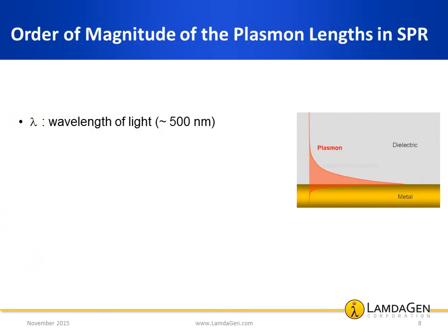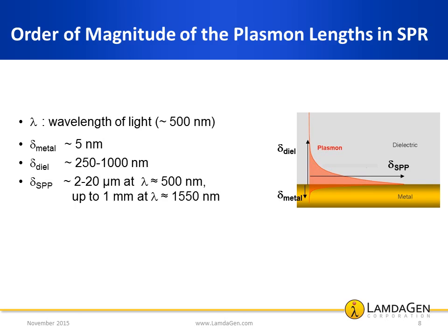Assuming we use an excitation light with a wavelength around 500 nanometers, let's examine the characteristics of the resulting plasmon lengths in SPR using a planar gold surface. The plasmon field in the metal is on the order of a few nanometers, meaning the surface plasmon does not penetrate deep into the metal. Conversely, the evanescent field in the dielectric can extend from 250 nanometers up to a micron, meaning the surface plasmon can sense up to a micron away from the surface. Finally, the surface plasmon propagation length can extend a few microns up to the millimeter scale in very ideal situations.